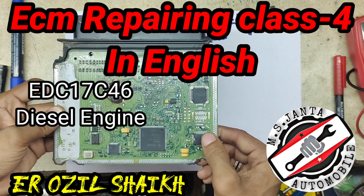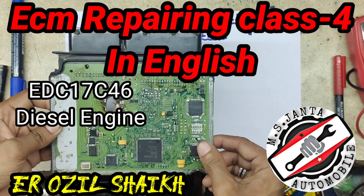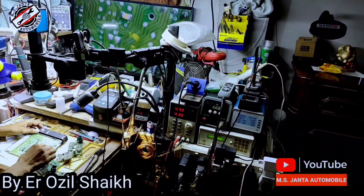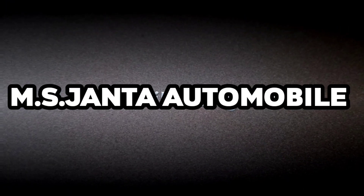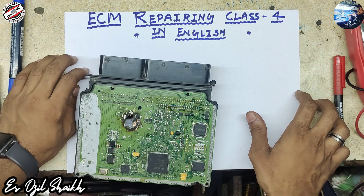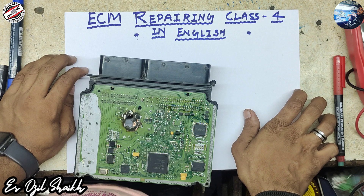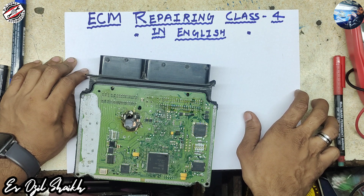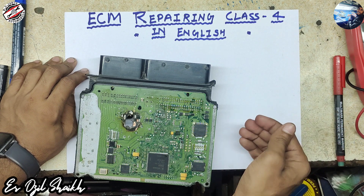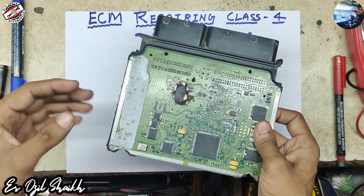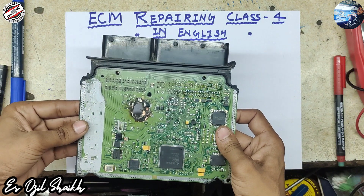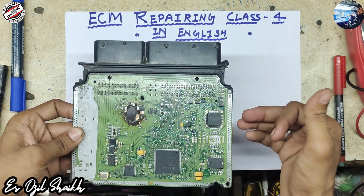Welcome back to my channel, this is Ozil. Today's class is ECM Repairing Class 4 in English. In this video we will discuss about 12 volt distribution inside the board — how 12 volt travels in the board after main relay, how the main relay gets engaged and turns on.